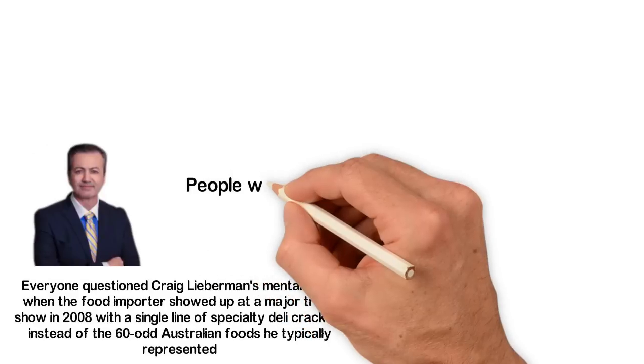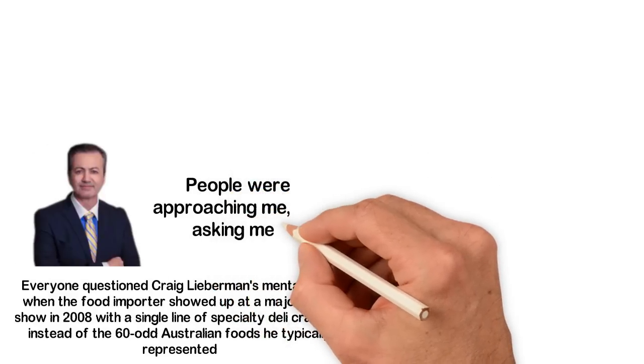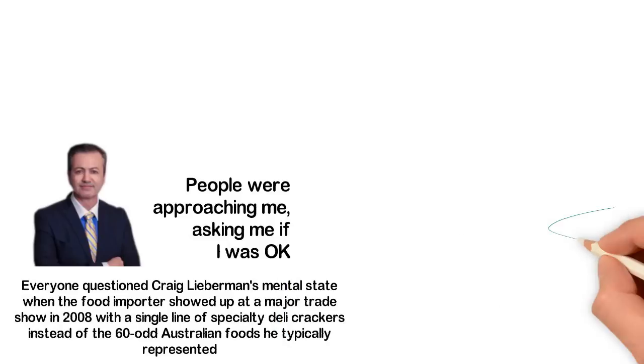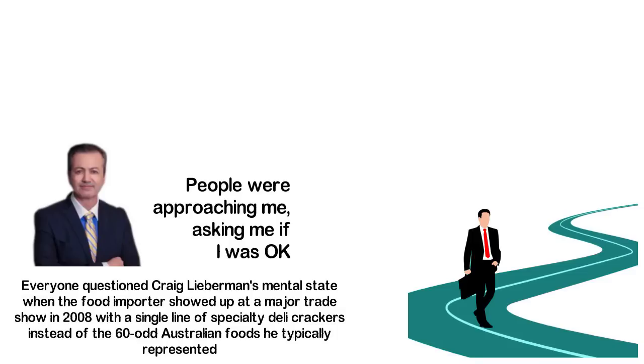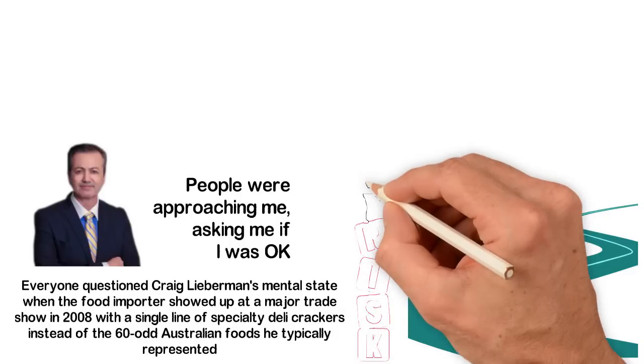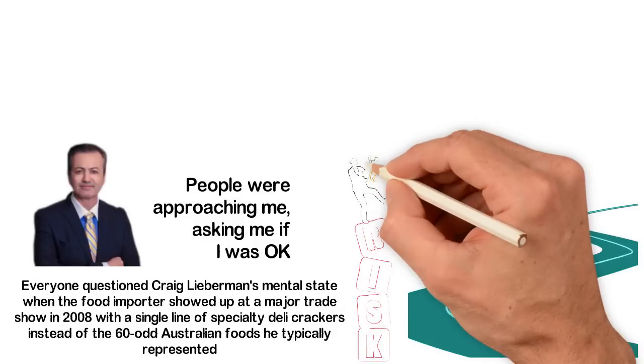According to Lieberman, people were approaching me, asking me if I was okay. When Lieberman started his business, it was pretty much a small importing business in Denver, Colorado called 34 Degrees, supplying wine and artisan foods he had found in Australia. Although his wares were popular, Lieberman wasn't actually making profit.